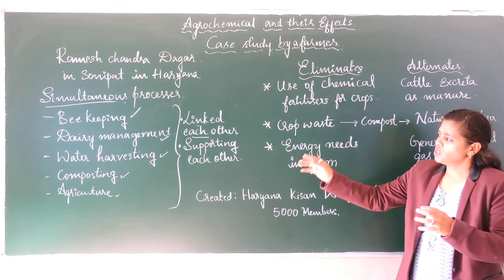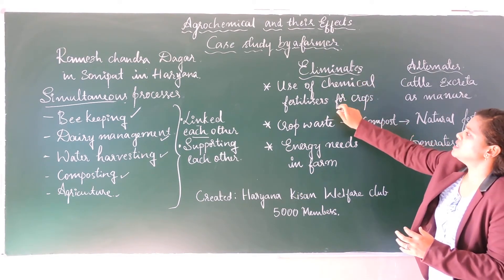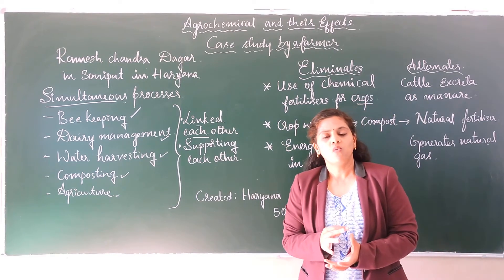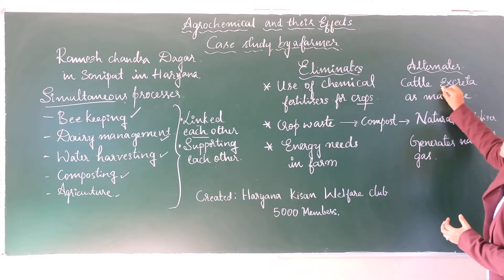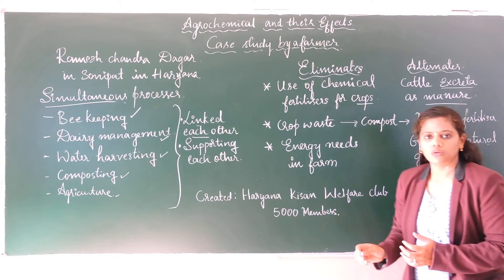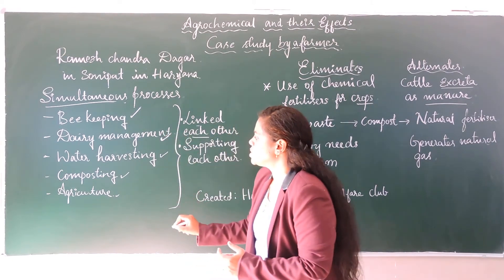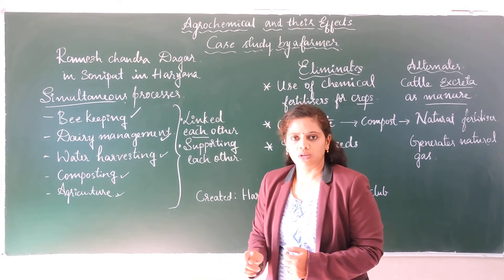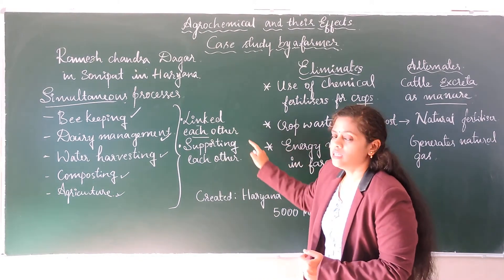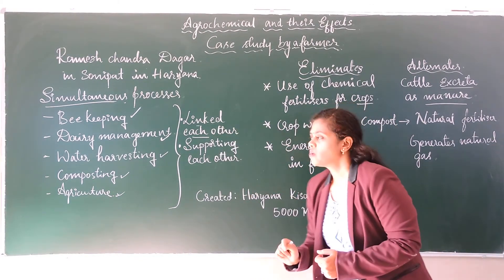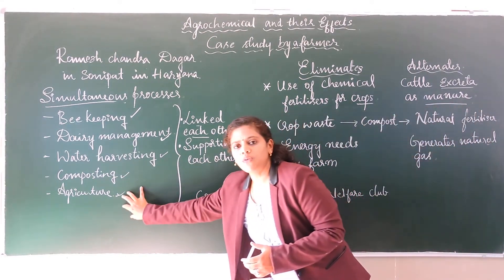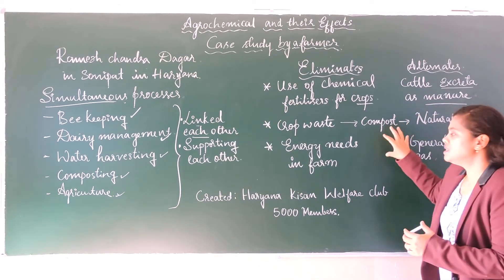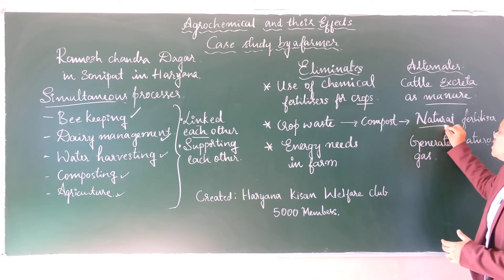These linked processes eliminated the use of chemical fertilizers for crops. Instead, cattle excreta from dairy management was used as manure for agriculture. In agriculture, crop waste was generated, and that crop waste was composted and used as a natural fertilizer. In this way the processes were linked and supporting each other.